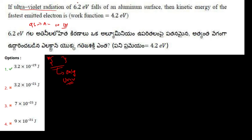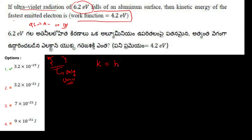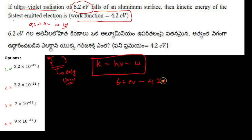It is given that if ultraviolet radiation of 6.2 eV falls on an aluminium surface, then the kinetic energy of the fastest emitted electron is to be found. The work function is also given. We know that kinetic energy is given by radiation energy, that is hν, minus work function. So: 6.2 eV minus work function 4.2 eV.